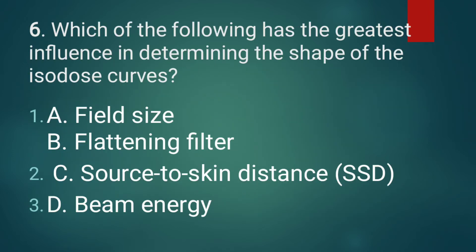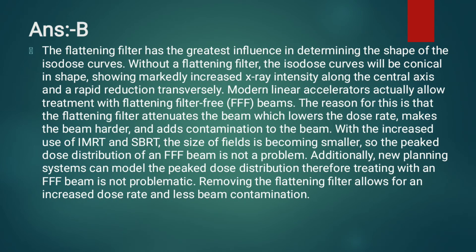Question 6: Which of the following has the greatest influence in determining the shape of isodose curves? The correct answer is option B, the flattening filter. The flattening filter has the greatest influence. Without it, the isodose curve will be conical in shape, showing markedly increased X-ray intensity along the central axis and a rapid reduction transversely. Modern linear accelerators allow treatment with flattening filter-free beams because the flattening filter attenuates the beam, lowers the dose rate, makes the beam harder, and adds contamination.